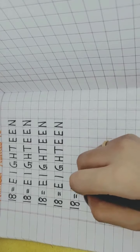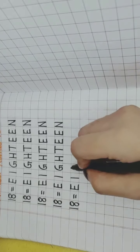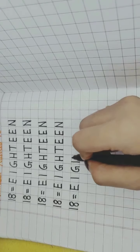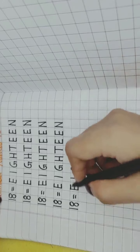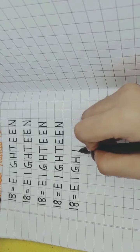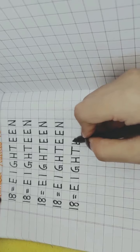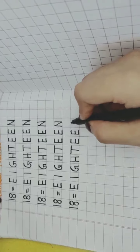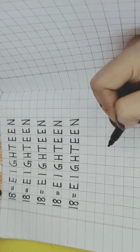E, what alphabet is this? E. What alphabet is this? And then I. Now this is G. What alphabet is this? H. H for hen. T, T for tiger. E, E for elephant, right? N for nest. See, 18.